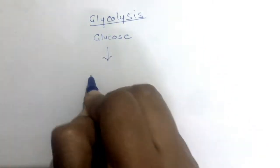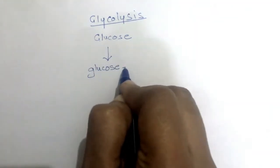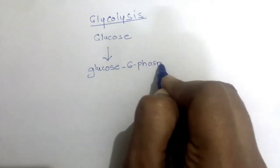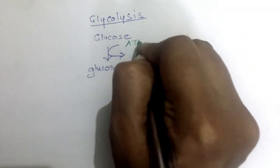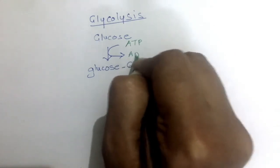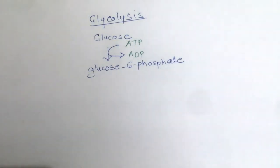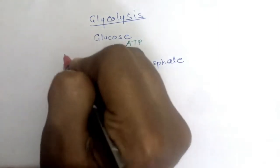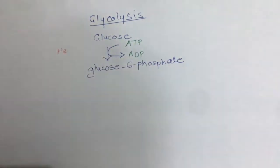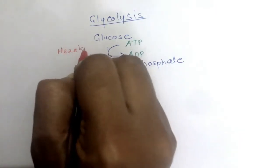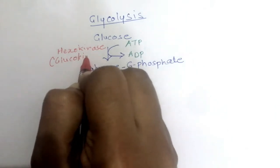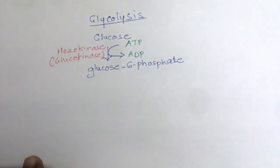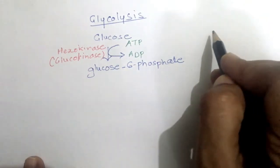Glucose is converted to glucose-6-phosphate in the first step. For this reaction, one phosphate is added. This phosphate comes from ATP (adenosine triphosphate), which is then converted to ADP (adenosine diphosphate). So one phosphate is transferred from ATP to glucose, and this reaction takes place because of hexokinase, also known as glucokinase. Kinase is responsible for the addition of a phosphate group.